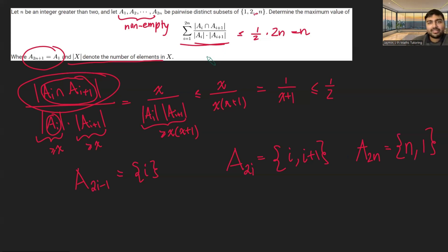Now all we need to do is show that each of these terms in the sum equals a half, and thus the sum will equal n. And this is pretty clear, because if we have ai intersect ai plus 1, like we've got here,